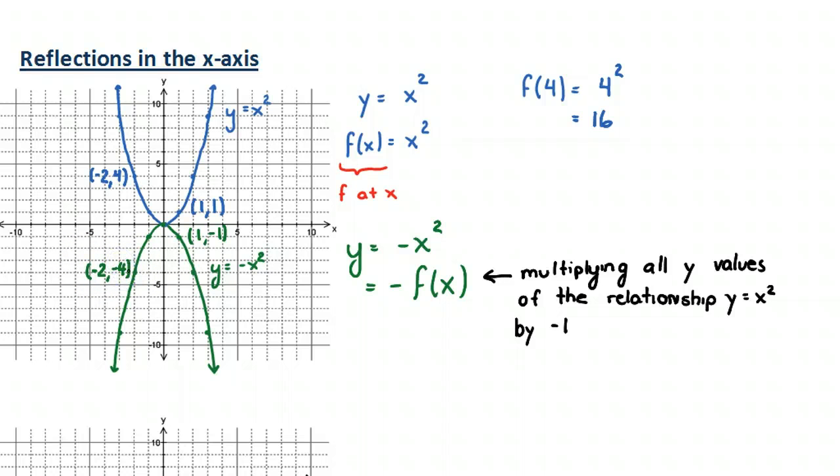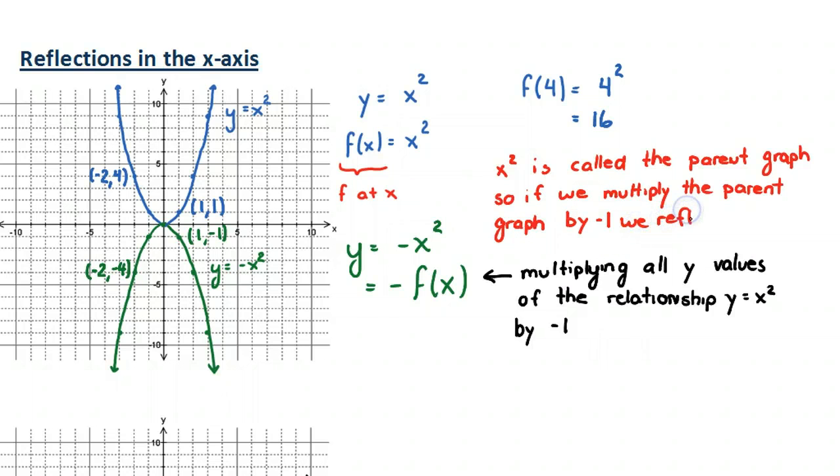So what we say is that when we multiply the parent function by a negative, we actually are reflecting across the x-axis. So we said that x squared is called the parent graph or parent function. So if we multiply the parent graph by negative 1, we reflect across the x-axis. And this is the big idea here.